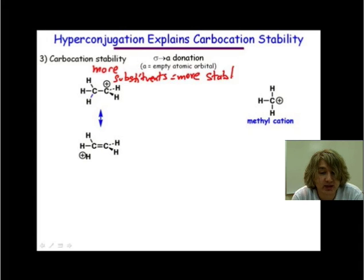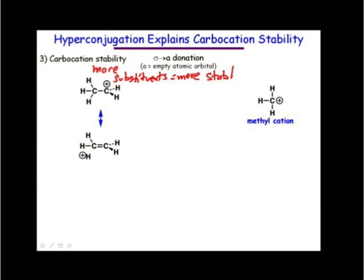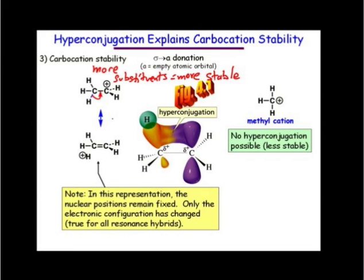Now that stability was explained by hyperconjugation briefly in Chem 232. What we can do is we can draw this double bond no bond resonance structure once again. Taking the electrons from this carbon hydrogen single bond here on the left, putting them locally, making a pi bond here between our two carbons. Our nuclei, their nuclear positions remain fixed. They did not move. Only the electronic configuration changed. So therefore this is a valid resonance structure.